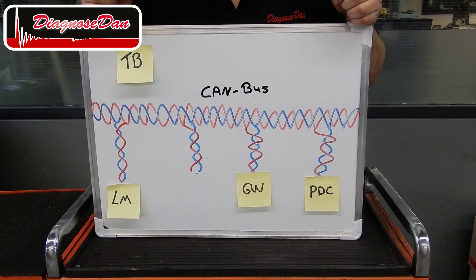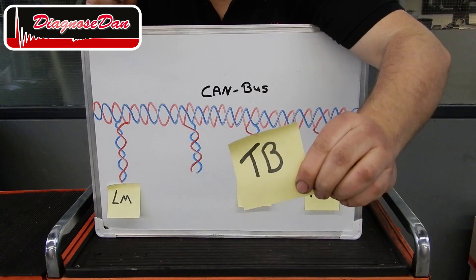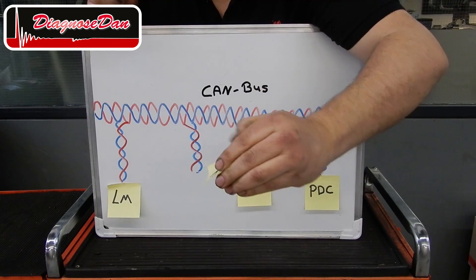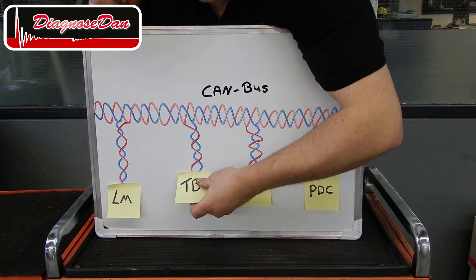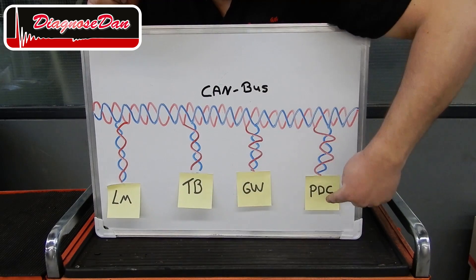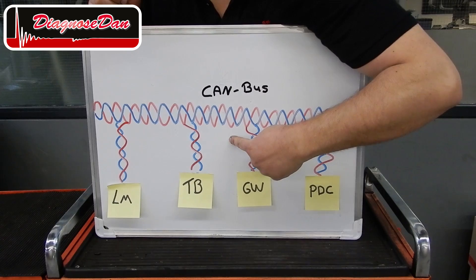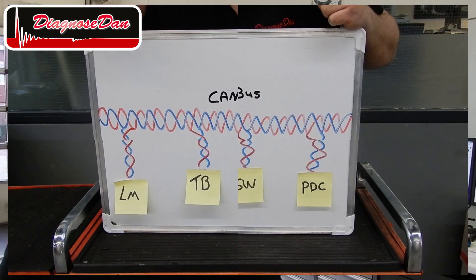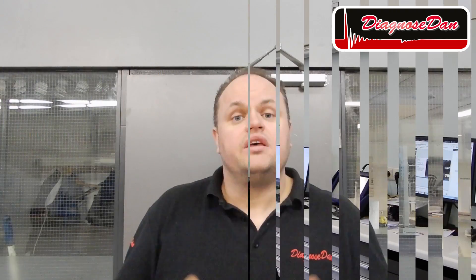Coding is also done on networks. So when you add a new module onto the network — like this towbar module — make sure you code that towbar module into the network, so the other modules know there is a new module that might communicate on that CAN bus. Now this car didn't leave the factory with a towbar, as you could see in the online as-built information. Somebody fitted an aftermarket towbar and coded it into the car, but somehow forgot to code it into the camera. You might wonder why the towbar needs to be coded into the camera of the traffic sign recognition system.